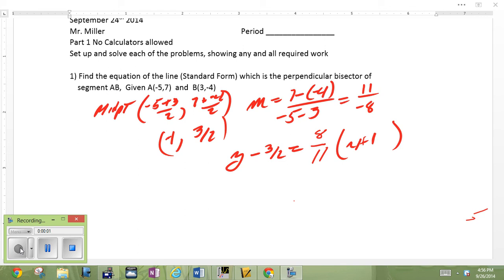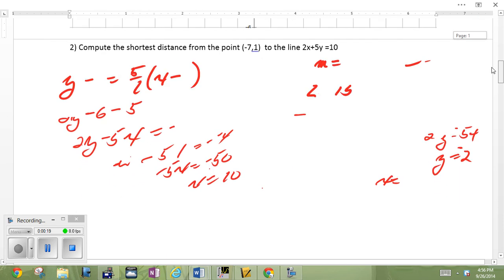Let's go over the solutions to this latest quiz. Find the equation of the line in standard form which is perpendicular bisector of the segment AB through A negative 5, 7, B 3, negative 4. I did give you a graph, you want to plot them, you plot them.